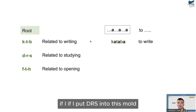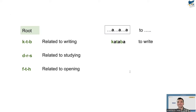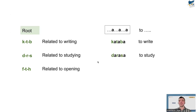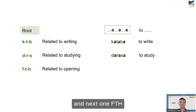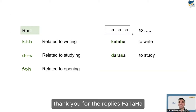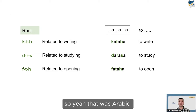The audience correctly applies the molds — 'darasa' for D-R-S and 'fataḥa' for F-T-Ḥ. The idea of the three-letter root and mold system is very unique to Semitic languages. That concludes the Arabic section — I hope I didn't scare you. We'll come back to it a bit when we discuss the dialects.